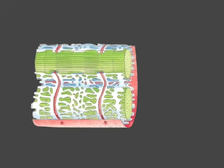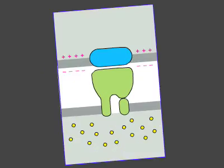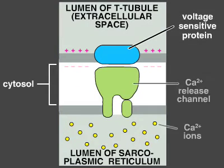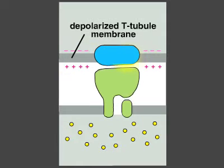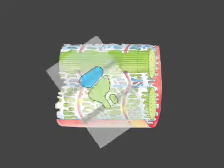When the cell is stimulated, a wave of depolarization — that is, an action potential — spreads from the synapse over the plasma membrane and via the T-tubules deep into the cell. A voltage-sensitive protein in these membranes opens a calcium release channel in the adjacent sarcoplasmic reticulum, which is the major calcium store in muscle cells, thereby releasing a burst of calcium ions all throughout the cytosol of the cell.